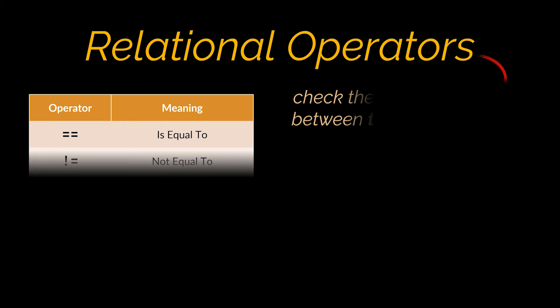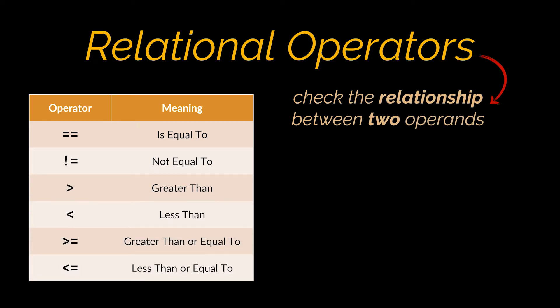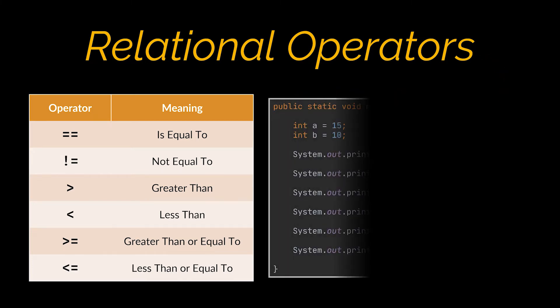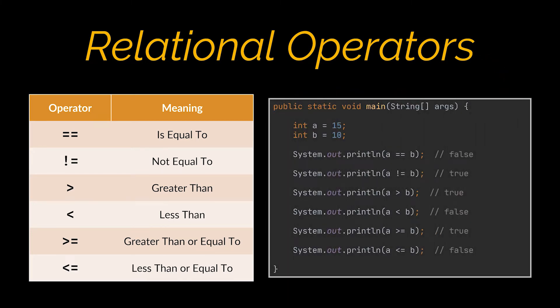Now, concerning Java's relational operators, we use them to check the relationship between two operands. As you can see the result of such operators is a boolean, either true or false.